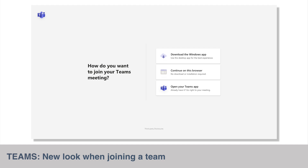When launching a Teams meeting from a link, users will be provided with clearer options for how they would like to join the meeting. This is going to be so helpful for people new to Teams — when this update arrives it will give very clear instructions on what to do next: download the app, continue in the browser, or open in Teams. This will be rolling out from late April.